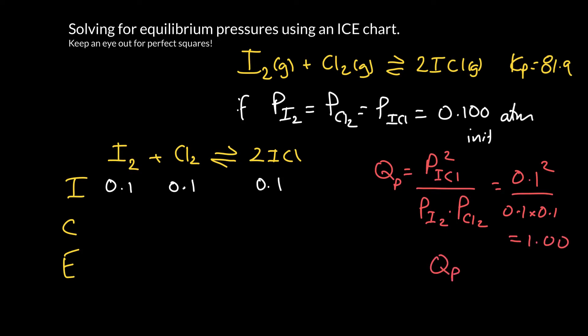And how does that compare? That is much smaller than Kp. So it means that Qp's got to get bigger. That means that the concentration, or the pressure of ICl, has got to go up, and the pressure of iodine and chlorine has to go down.